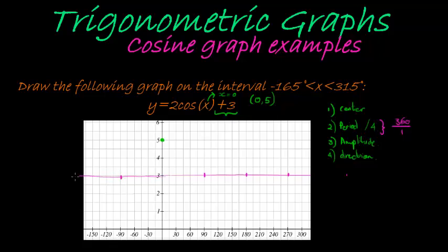The amplitude in this case is whatever is in front of the function multiplying the function, and that is 2. Amplitude is how high I go above the center line, in this case 2 units above the center line and 2 units below the center line. Those are my boundaries. My graph must stay within these two lines.